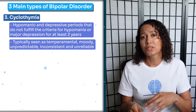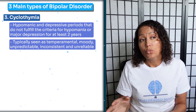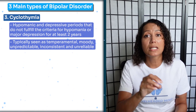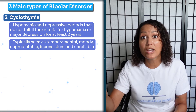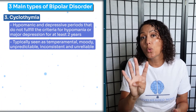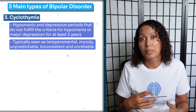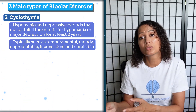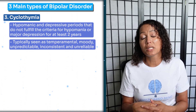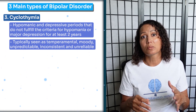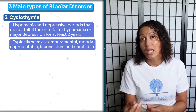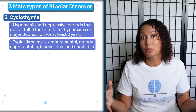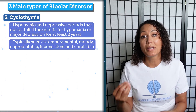A lot of people confuse cyclothymia with rapid cycling. Rapid cycling in bipolar is different — it refers to going from hypomanic to manic episodes and depression four or more times within a year. That is rapid cycling. Cyclothymia, by contrast, is having some hypomanic and depressive symptoms that don't meet the full criteria for a hypomanic episode or major depressive episode.